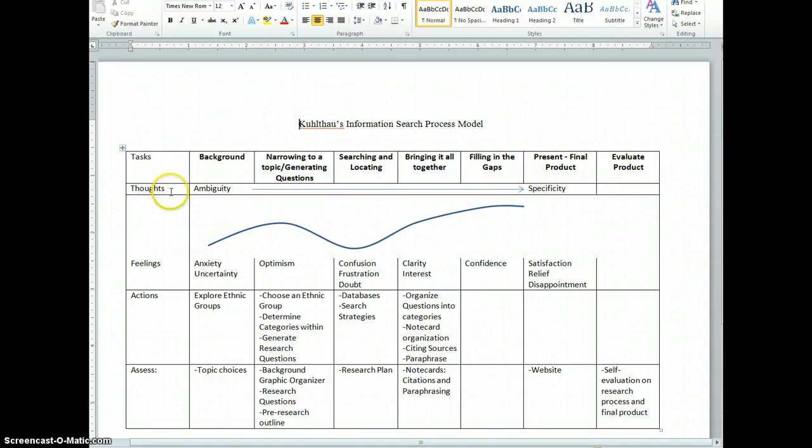The next category on the way down is thoughts. So, as you go through this process, your thoughts about your research topic are going to start by being ambiguous or vague or not clear. Then as you go through, the hope is that your thoughts on the topic that you're researching will become specific.